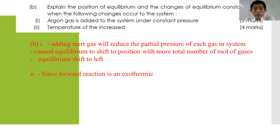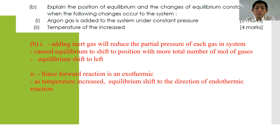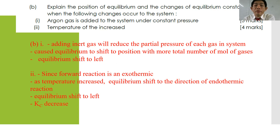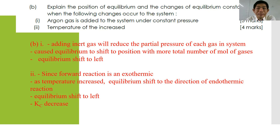For number 2, the temperature of the system increases. Always remember to state that the forward reaction is exothermic. Increasing temperature causes equilibrium to shift in the direction of the endothermic reaction, which is to the left. As a result, equilibrium shifts to the left — reactant increases, product decreases. Kc will automatically decrease in this case, because the only factor that influences Kc and Kp is temperature.